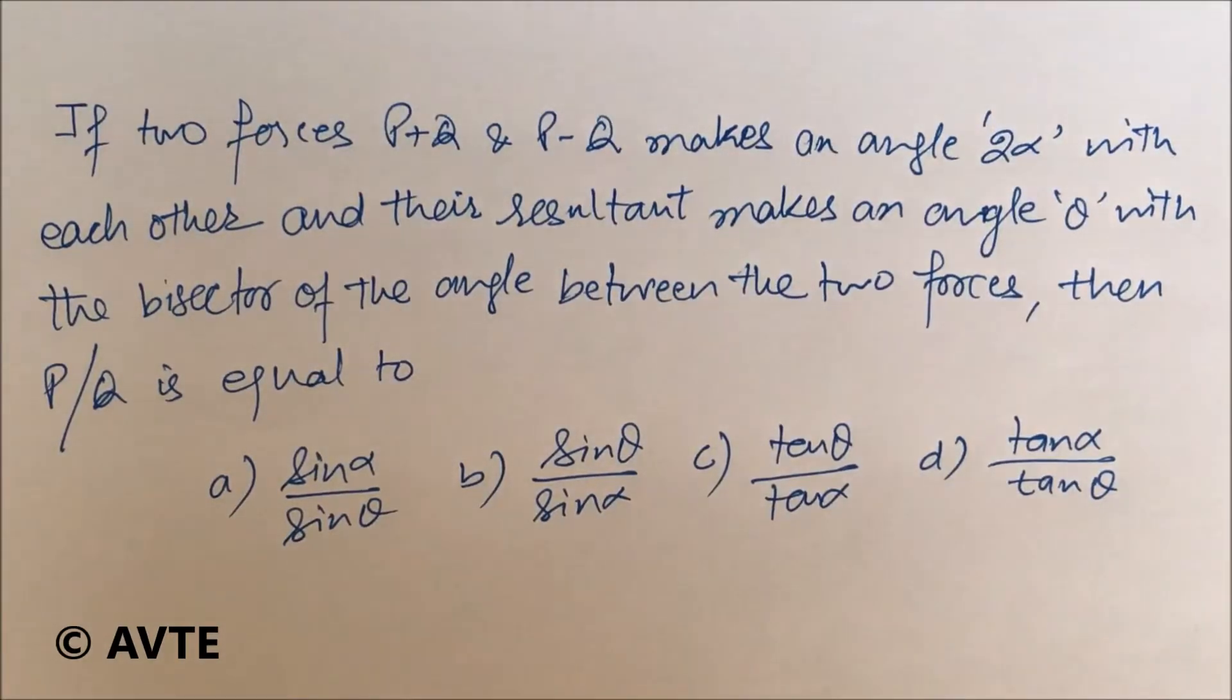If two forces P+Q and P-Q make an angle 2α with each other, and their resultant makes angle θ with the bisector of the angle between the two forces, then the ratio P/Q is equal to one of the given options.